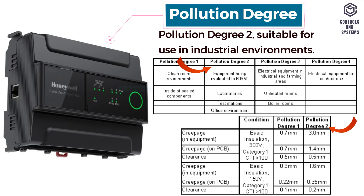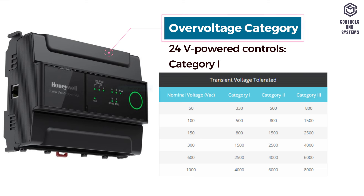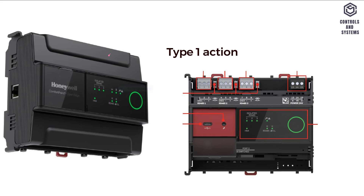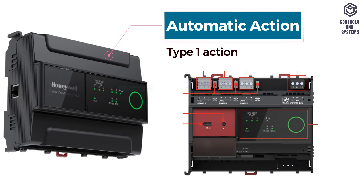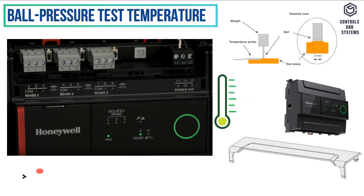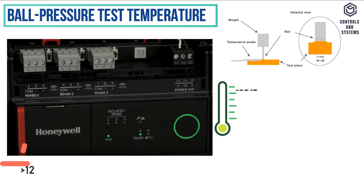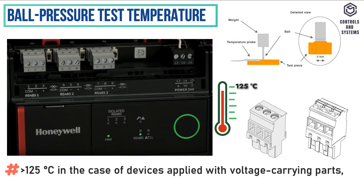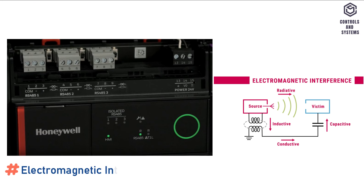Safety Information: Electric Shock Protection is SCLV, Pollution Degree is 2, Overvoltage Category is Category 1, Rated Impulse Voltage is 330 Volt AC for Category 1, Automatic Action is Type 1 Action, Software Class is Class A. Ball Pressure Test Temperature: greater than 75°C for all housing and plastic parts, and greater than 125°C for devices applied with voltage-carrying parts, connectors, and terminals.